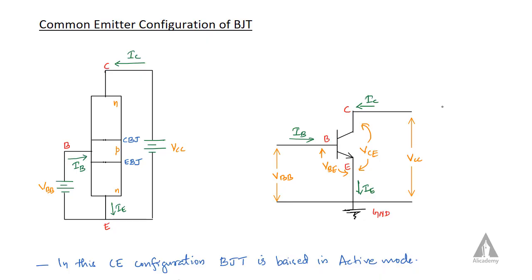In this lecture we are going to discuss the common emitter configuration of BJT, that is bipolar junction transistor. In the common emitter configuration, the emitter is common for both the input side and the output side.